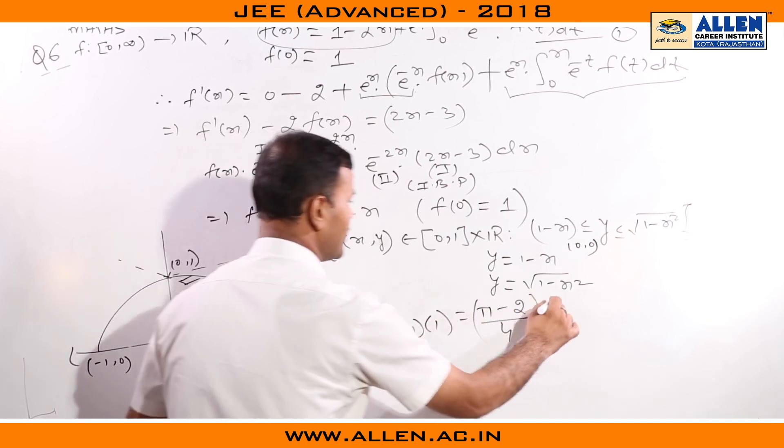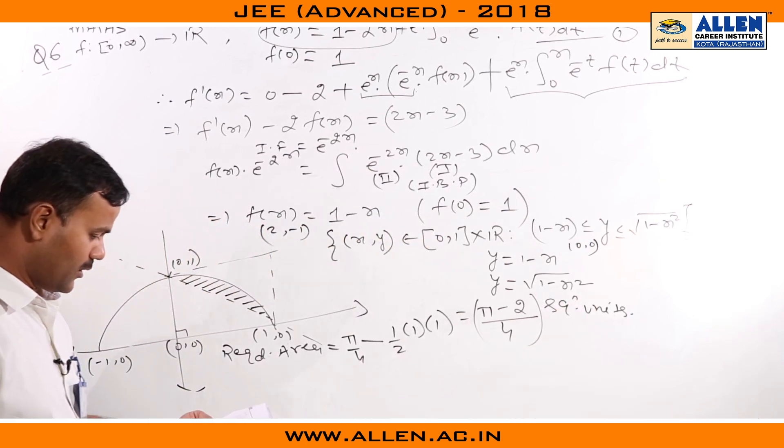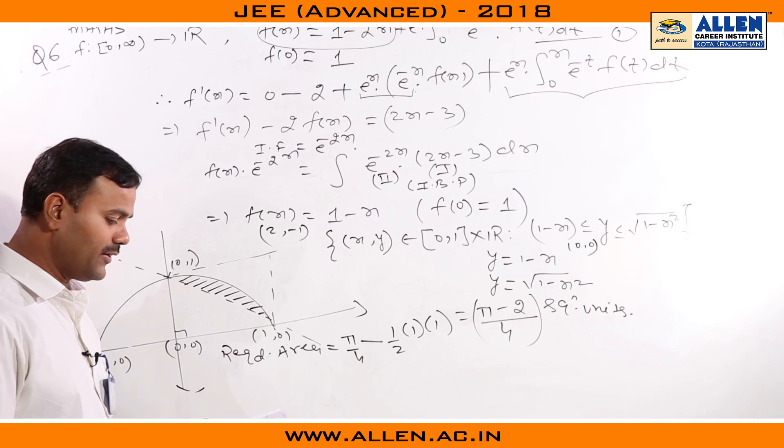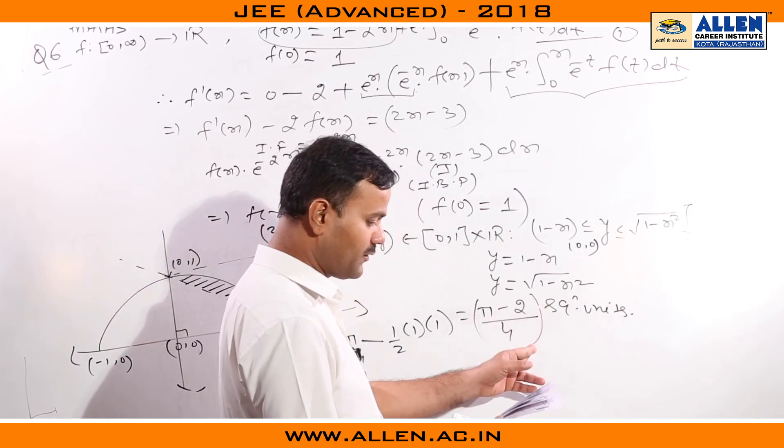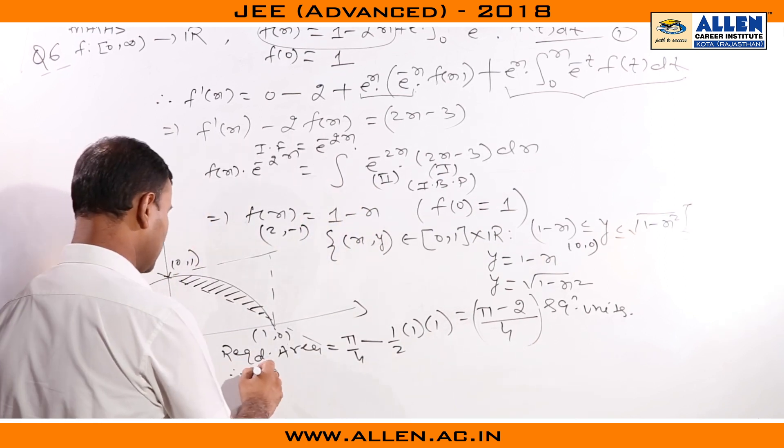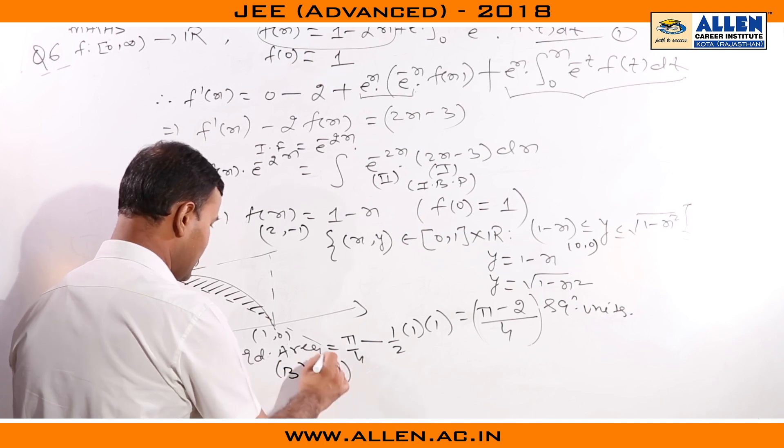Let us check the options. In option C, we are given the area same as what we have found: (π - 2)/4 square units. So finally, the options for this question are B and C correct.